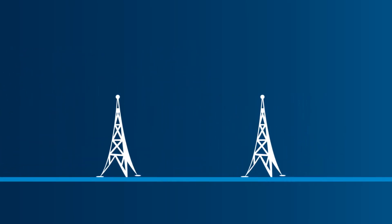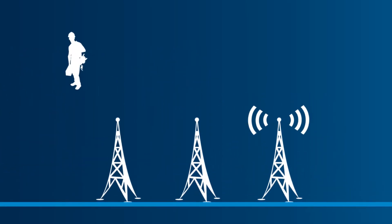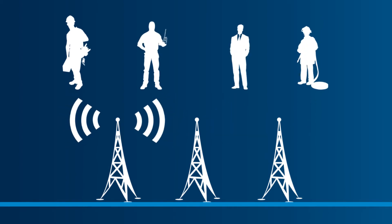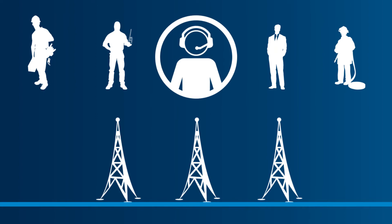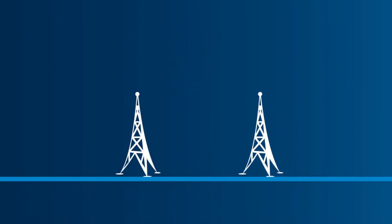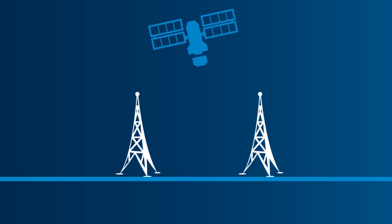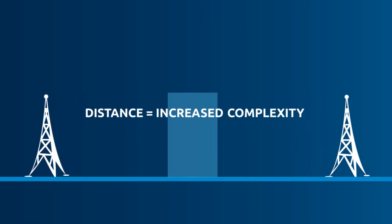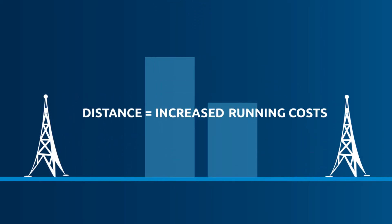Historically, radio transmissions are made from radio repeater sites that enable mobile radio users to communicate with each other, and even with dispatch operators. Many radio networks are actually a collection of repeater sites that are interconnected by some means, usually radio links, leased lines, or even satellites. But these can be all very expensive options to install and to operate, and distance can increase complexity and running costs.